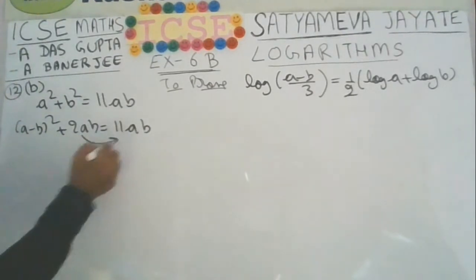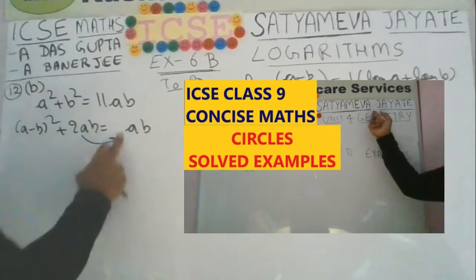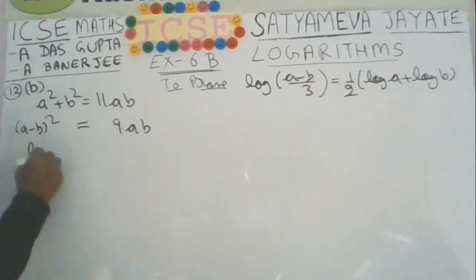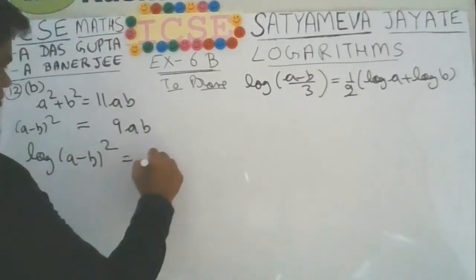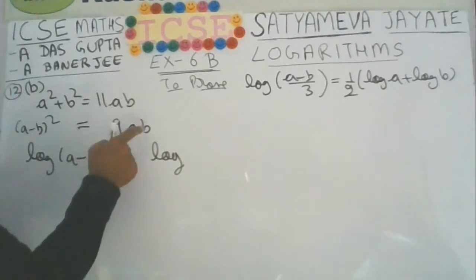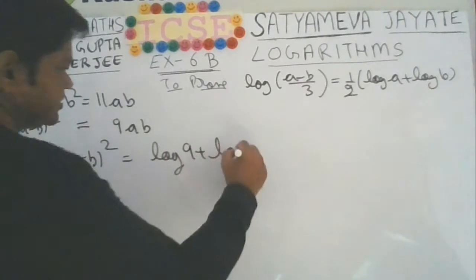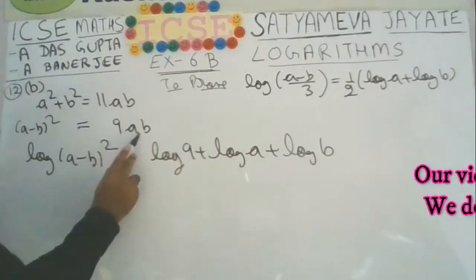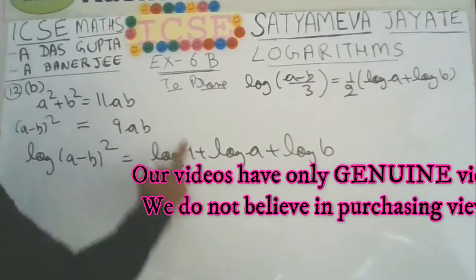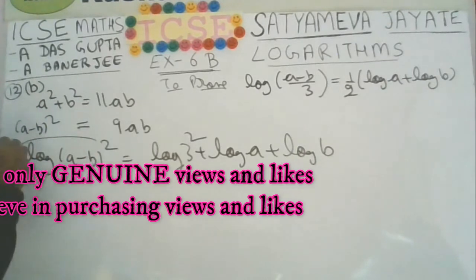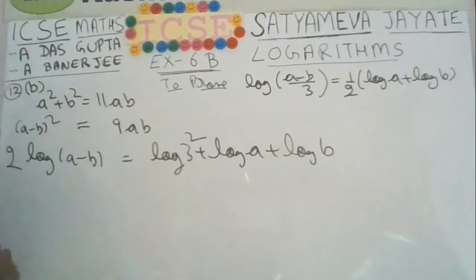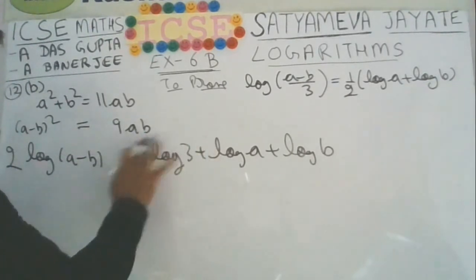Before taking log, transfer 2ab from left to right: 11 minus 2 gives 9 times ab, so a minus b whole squared equals 9ab. Now taking log on both sides: log of a minus b whole squared equals log of 9 times a times b. Multiplication converts to addition: log 9 plus log a plus log b. Writing 9 as 3 squared, the 2 comes in front: 2 times log of a minus b equals 2 times log 3 plus log a plus log b.